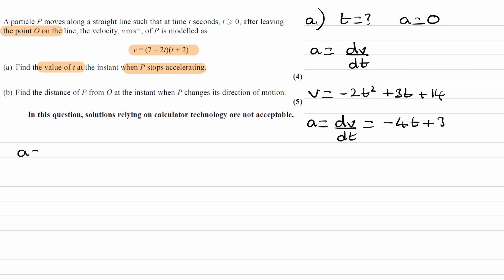Set the acceleration equal to 0. So minus 4t plus 3 is 0, and then we end up with t is equal to 3 over 4 seconds. And that's part A, pretty straightforward there.